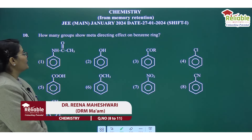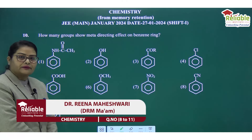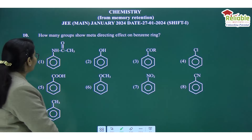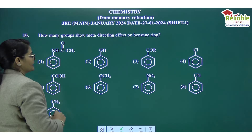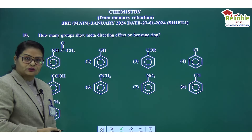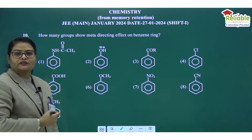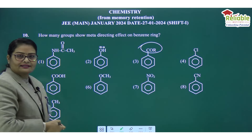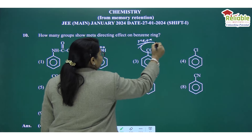The next question asks: how many groups show a meta-directing effect on the benzene ring from the given structures? The first structure is the NHCOCH3 group, which shows a +M effect, so it is ortho-para directing. The OH group also shows a +M effect, so it is ortho-para directing. COR is a –M group, so it is meta-directing.